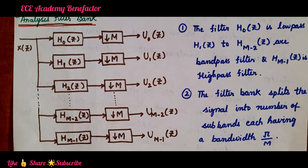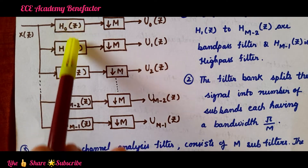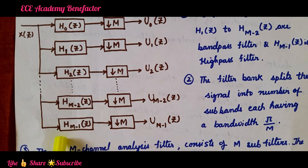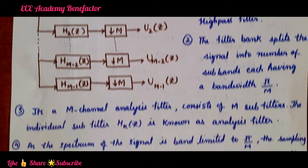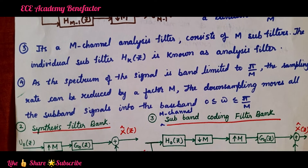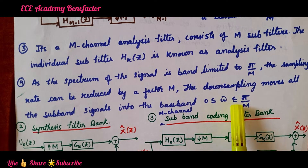There is no overlapping of the signals. It is an m-channel analysis filter bank consisting of m subband filters known as analysis filters. As the spectrum of the signal is band-limited to π/m, the sampling rate can be reduced by a factor of m. The down sampling moves all the subband signals into a baseband ranging from 0 to π/m.